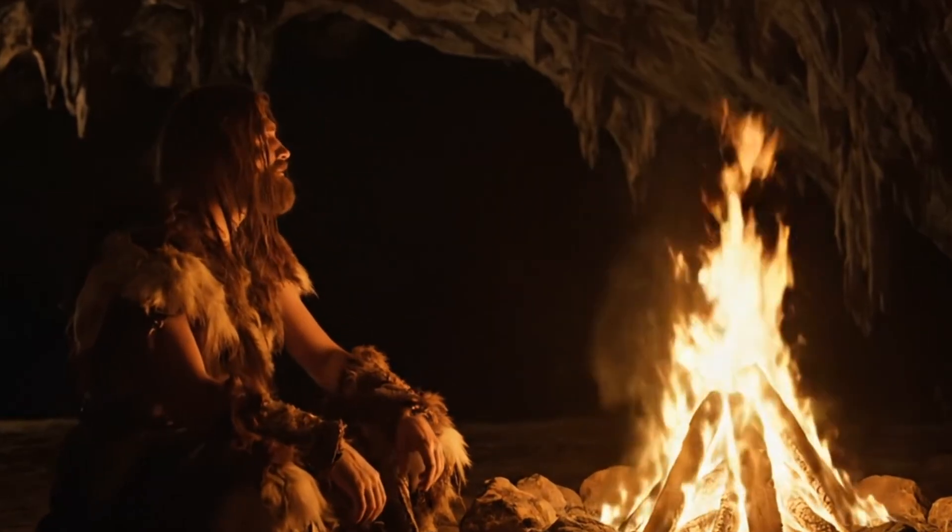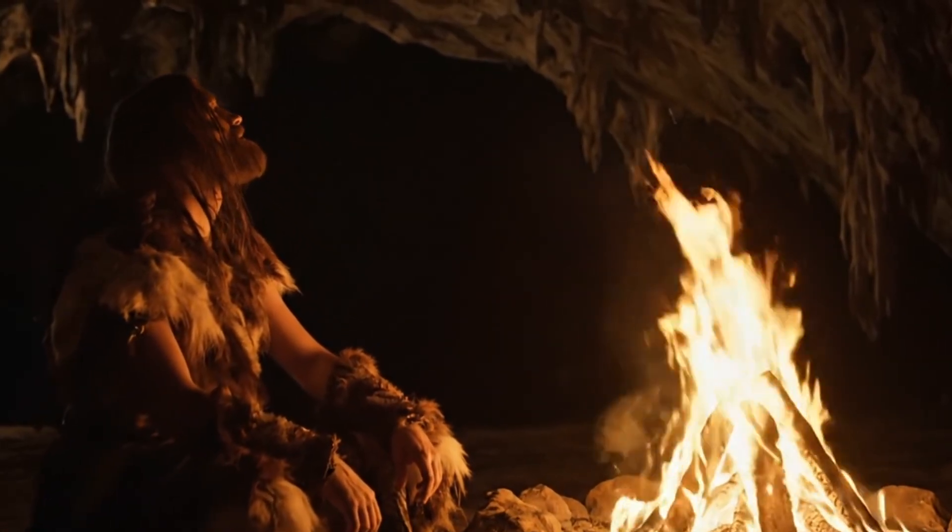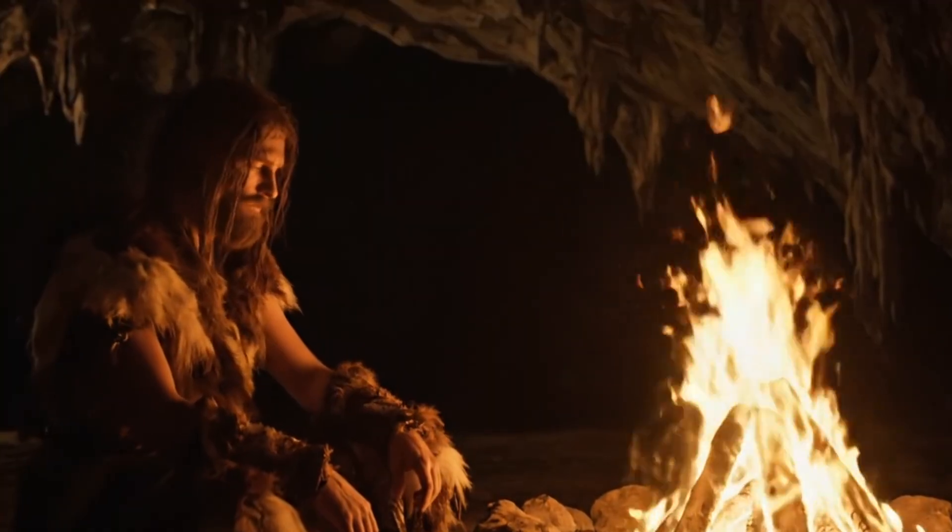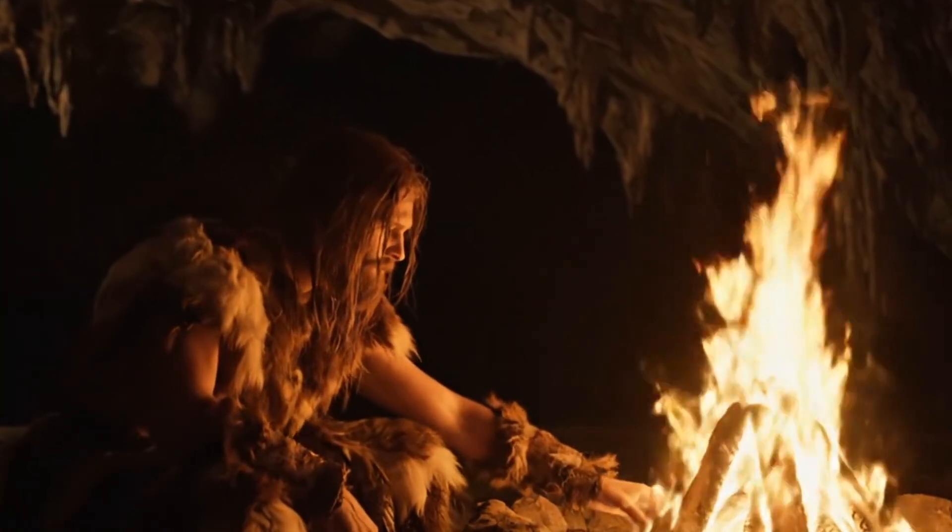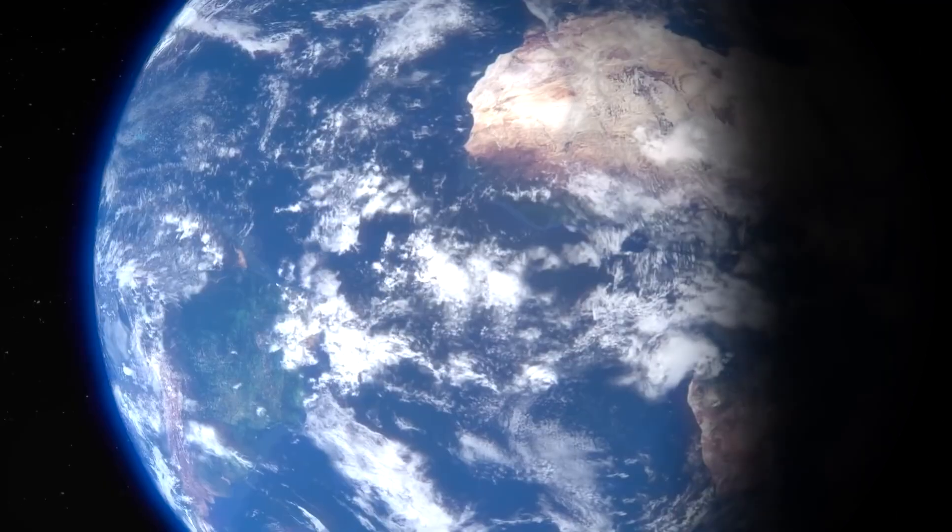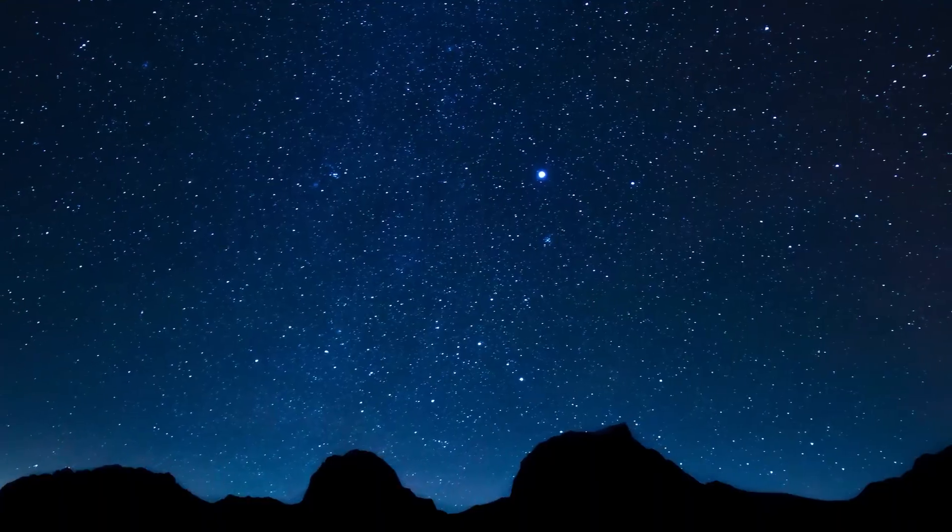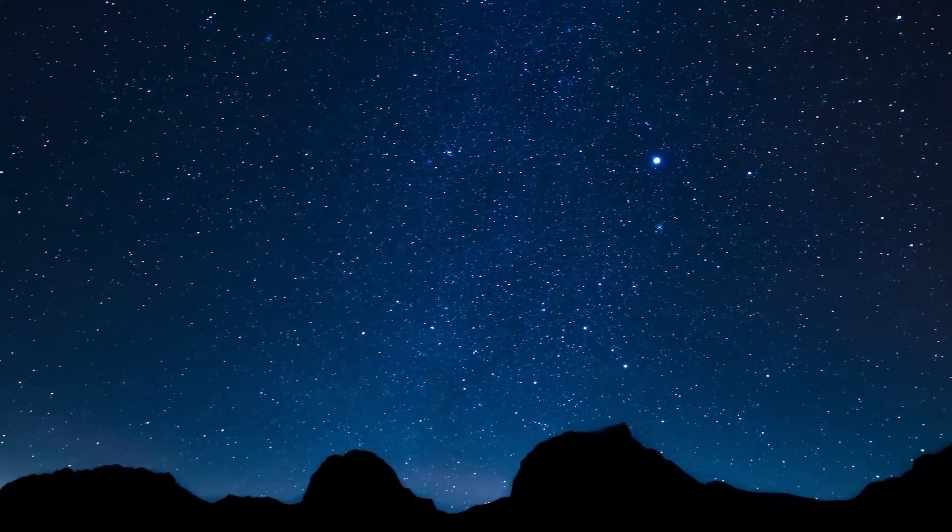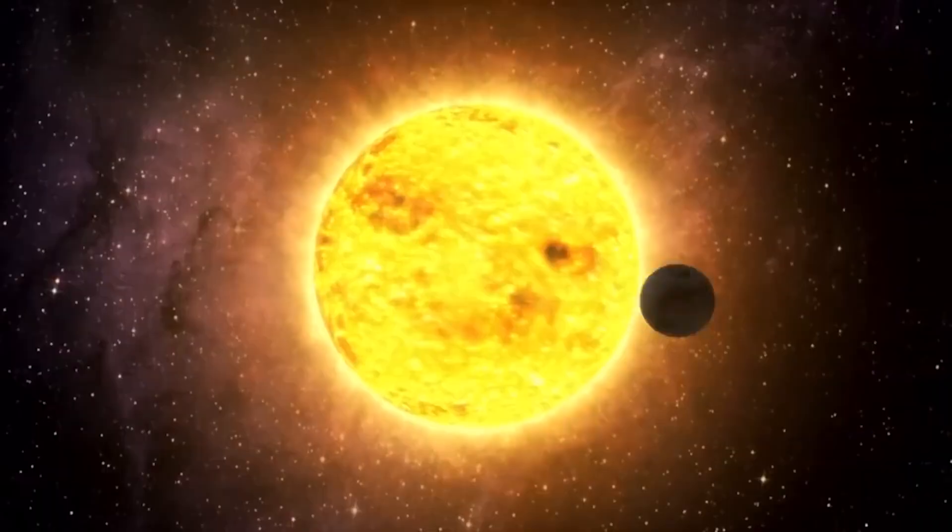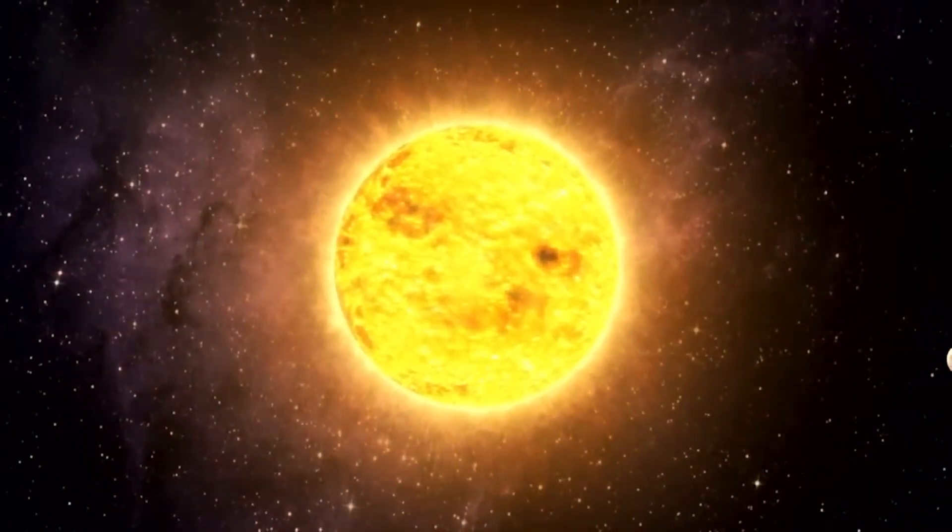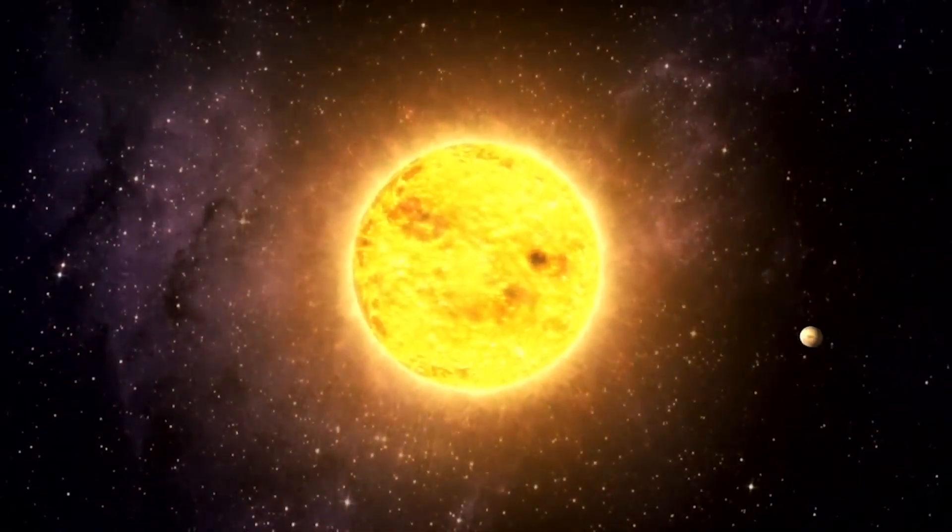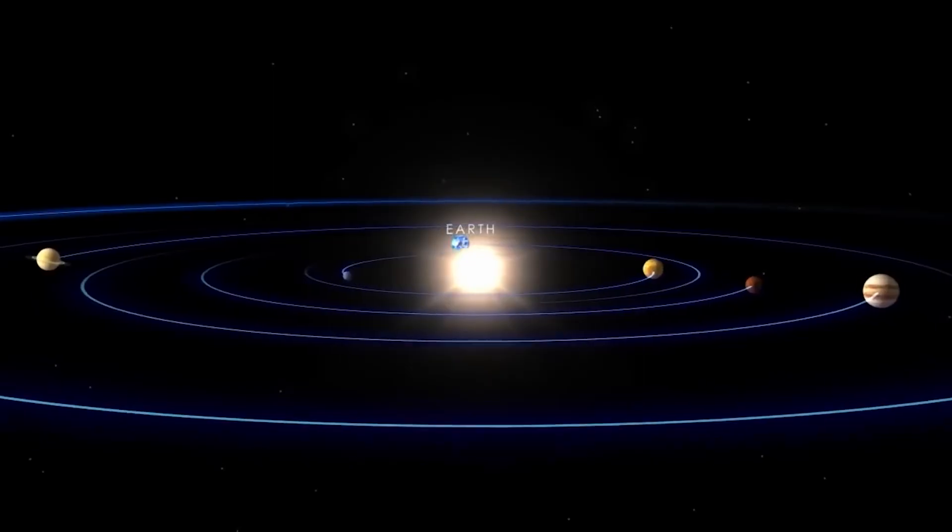Once upon a time, our hunter-gatherer ancestors believed that the entire universe was limited to what they could see around them. Then, humanity placed itself at the center of the cosmos, imagining that everything in the sky revolved around us while the Earth stood still. Later, we discovered that the sun seemed to be at the center, and our planet actually orbited it.